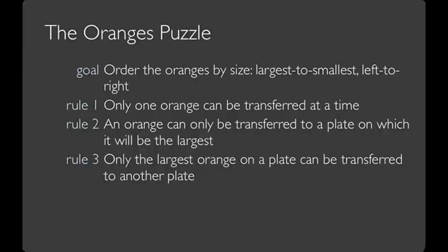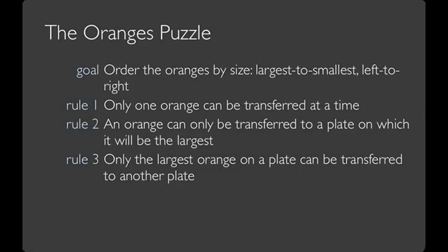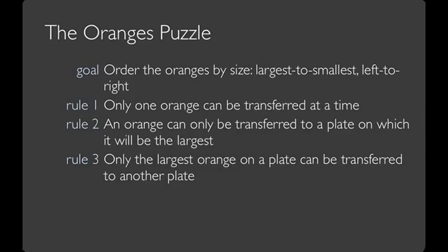And so, the way that the oranges puzzle works is you need to order the oranges by size, largest to smallest, left to right. Only one orange can be transferred at a time. An orange can only be transferred to a plate on which it'll be the largest. And only the largest orange on a plate can be transferred to another plate.